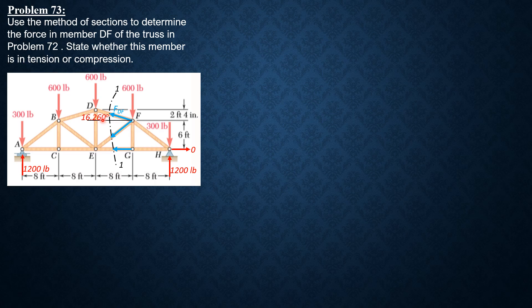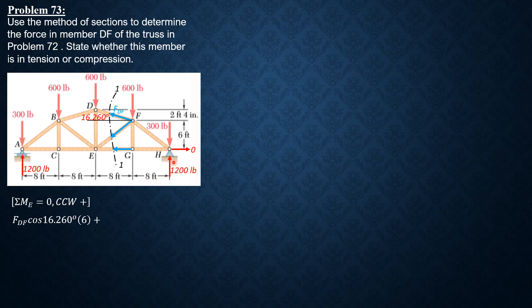The vertical component is upward. We always assume the member is in tension. Summation of moments about E equals zero, considering all forces to the right of this section, counterclockwise positive. We have FDF cosine 16.26 degrees times moment arm 6 feet, plus FDF sine 16.26 degrees times moment arm 8 feet, plus 1200 times 16 feet.